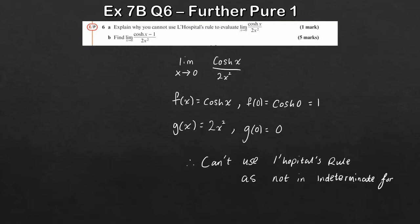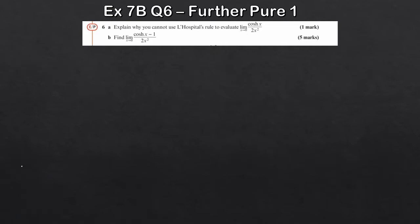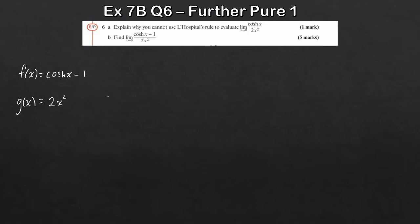Now for part b, we treat this again as a quotient of two functions. Let f(x) = cosh(x) − 1 and g(x) = 2x². We don't need to show the check again because we know the numerator gives cosh(0) − 1 = 1 − 1 = 0, so it is an indeterminate form and we can apply L'Hôpital's rule.